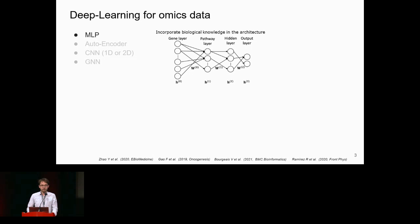In the MLP architecture, you can incorporate knowledge such as pathway information. The idea is to link a gene to a specific neuron in your next layer representing a pathway, so that subsequent layers can detect interactions between pathways. You could also use autoencoders for self-supervised training and then use the latent space to perform the final prediction.